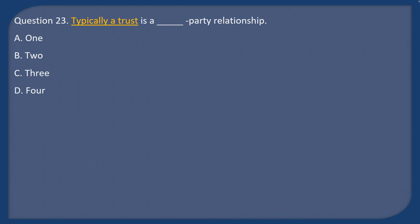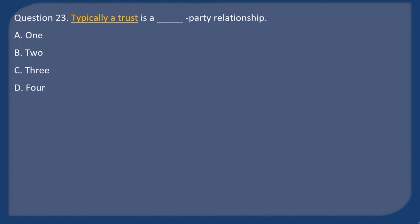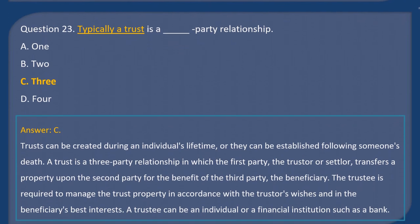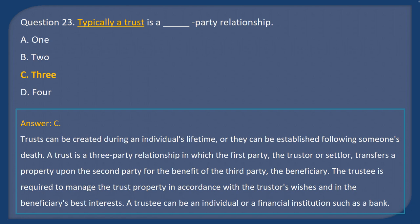Question 23: Typically, a trust is a how-many-party relationship? A) One, B) Two, C) Three, D) Four. Answer: C. A trust can be created during an individual's lifetime or established following someone's death. The trustee is required to manage the trust property in accordance with the trustor's wishes and in the beneficiary's best interest. A trustee can be an individual or a financial institution such as a bank.